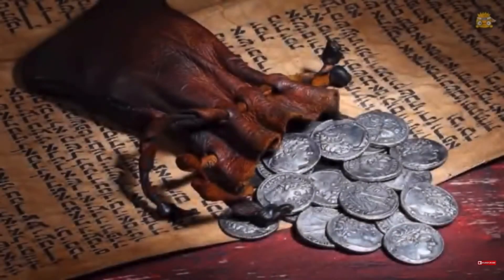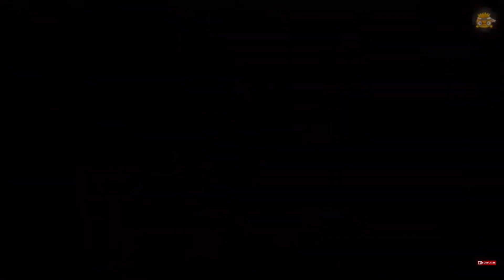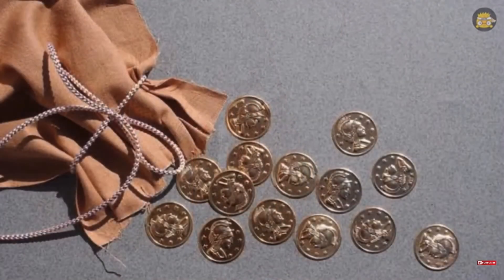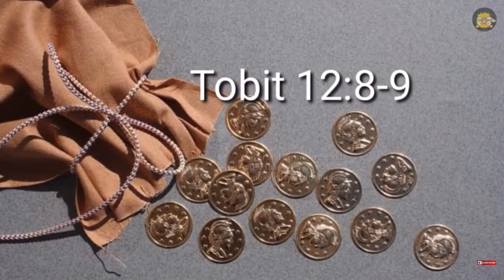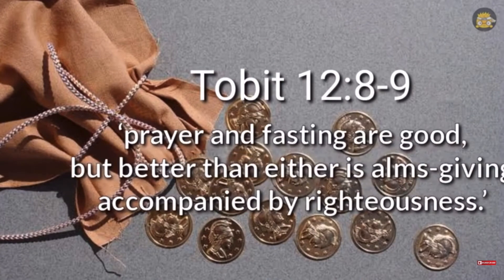Number six: A money bag. It symbolizes the Lenten penitential practice of almsgiving. In the book of Tobit 12:8-9, it says prayer and fasting are good, but better than either is almsgiving accompanied by righteousness.